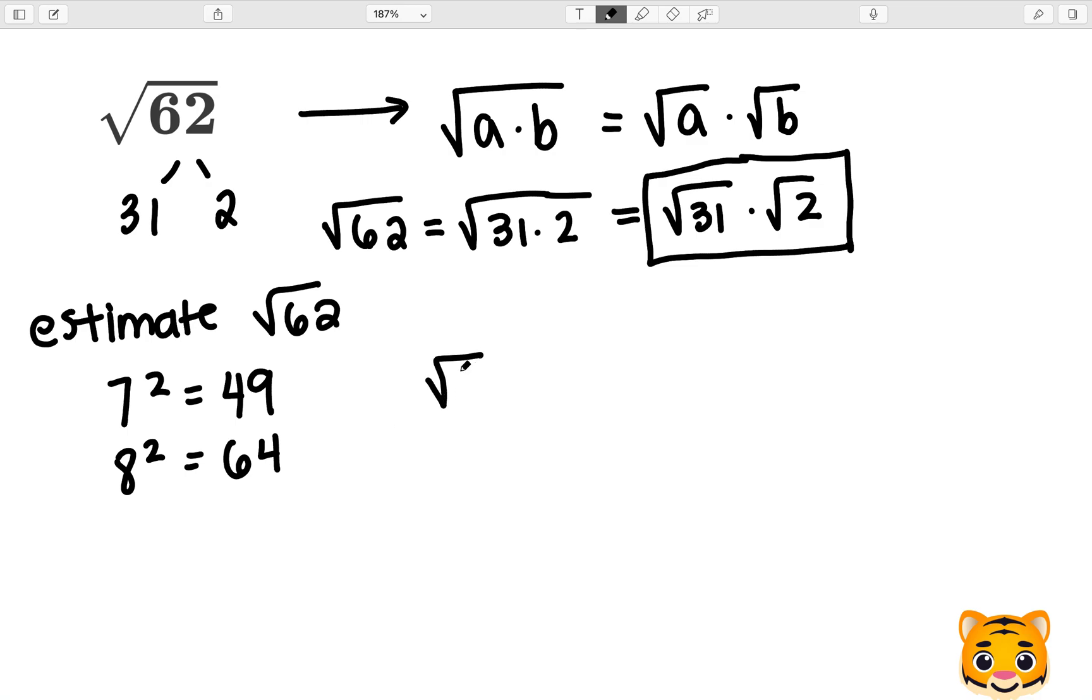Now we can see the square root of 49 will be less than the square root of 62, which will be in turn less than the square root of 64. Now we know 7 squared gives us 49, so the square root of 49 would be 7, and the square root of 64 would be 8. Therefore, the square root of 62 is between 7 and 8.